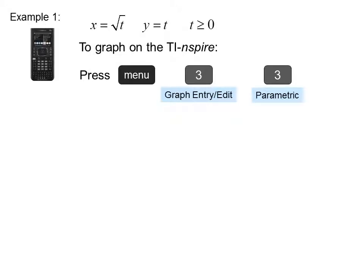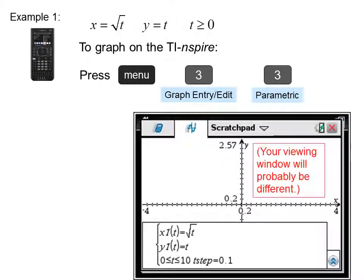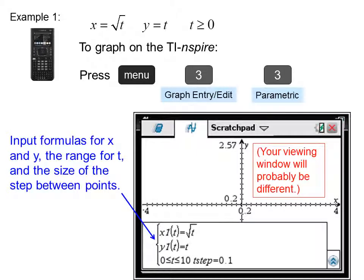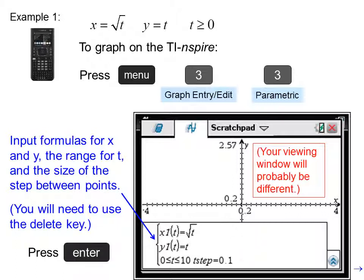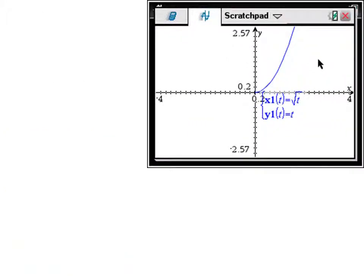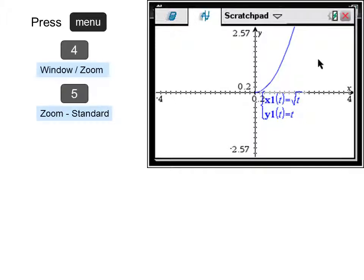Your viewing window will probably be different. Input the formulas for x and y, the range for t, and the size of the step between points. You will need to use the delete key probably to change what's there. Press enter and there's our graph.